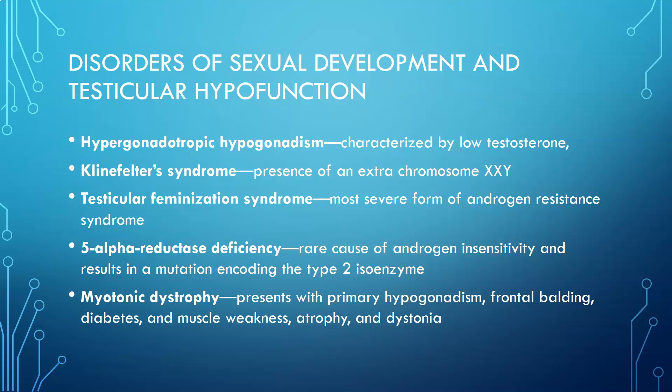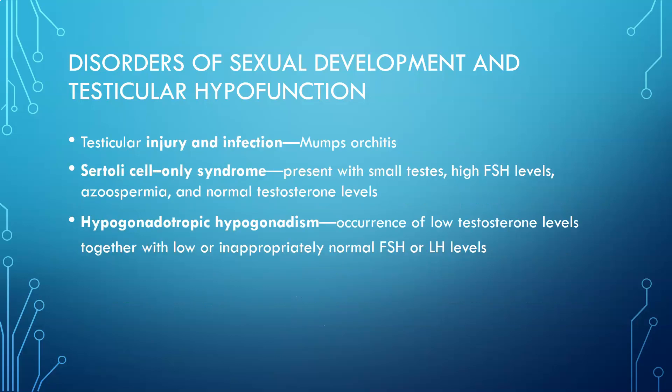Myotonic dystrophy presents with primary hypogonadism, frontal balding, diabetes, and muscle weakness, atrophy, and dystonia. There's also testicular injury and infections, such as mumps orchitis.